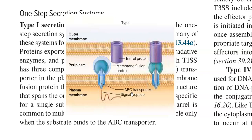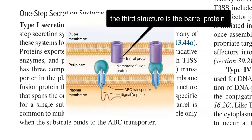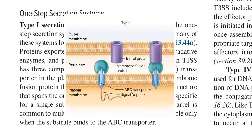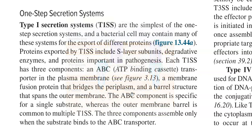The ABC component is specific for a particular substrate, whereas the outer membrane barrel is common to multiple different types of Type 1 secretory systems operating in a bacterium. These three components assemble only when the substrate binds to the ABC transporter system.